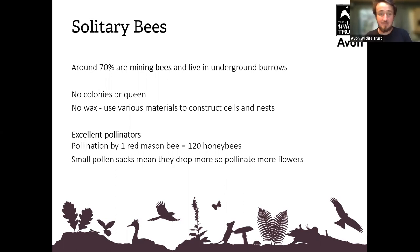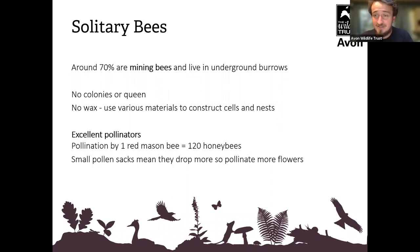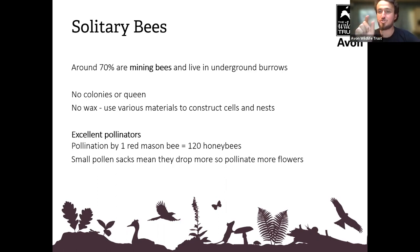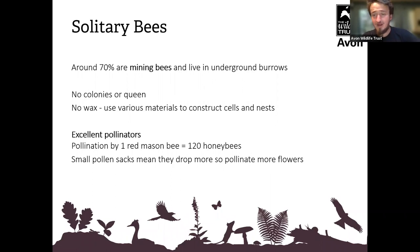Mining bees are particularly excellent pollinators, though that's not what they're trying to do — it's very much accidental. The red mason bee's pollination effort is equivalent to about 120 honeybees, simply because it's not as good at getting pollen home — it picks up a load and just drops more as it goes from plant to plant, which is brilliant from the flower's perspective. Solitary bees have shorter hairs on their legs so they can't store as much pollen and drop most of what they collect.